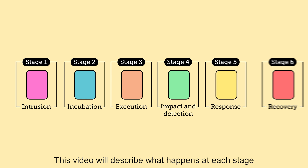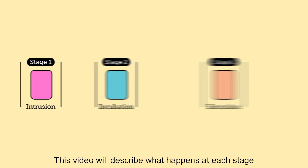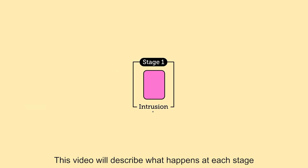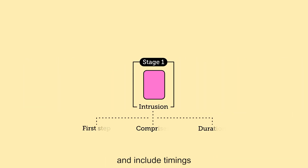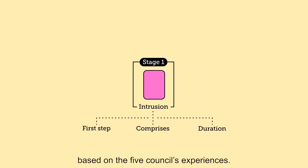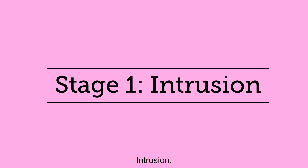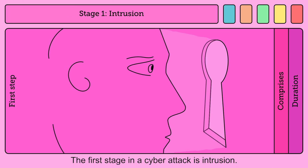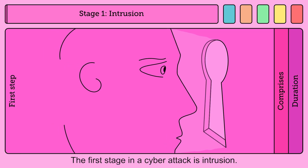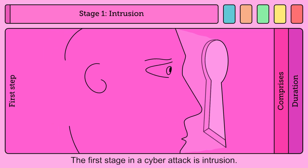This video will describe what happens at each stage and include timings based on the five Councils' experiences. The first stage in a cyber attack is Intrusion.